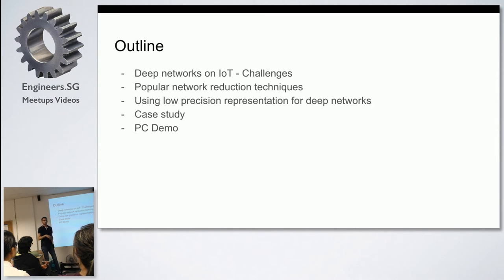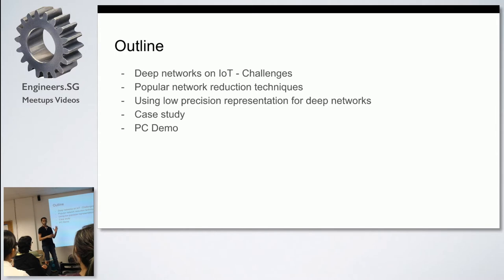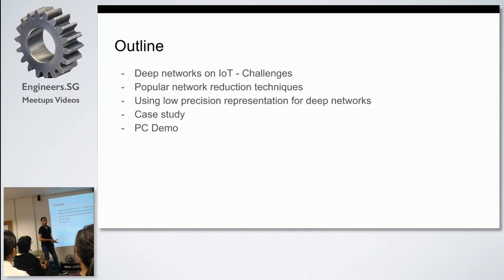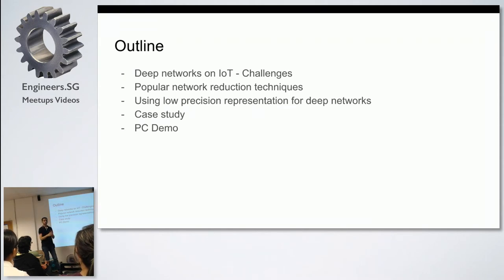Typically the process is: you collect the data. Say you want to detect a car — you collect millions of images of cars and then you train a deep learning network on that. At the end of training you will have a trained model. The filters are trained to detect the car, and that model — which is a set of parameters, a bunch of numbers — ranges from a few hundred megabytes to like a gigabyte, depending on the complexity of the deep learning network.